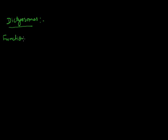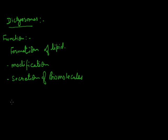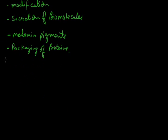The functions of the Golgi body: it helps in the formation of lipids in the cell. It is responsible for the modification of molecules or biomolecules and proteins. It is responsible for the secretion of biomolecules from the cell — biomolecules are molecules such as proteins, lipids, and fats that are synthesized inside the cell. It also helps in the formation of melanin pigment, which is responsible for skin color in human beings. It is also responsible for the packaging and formation of biomolecules.